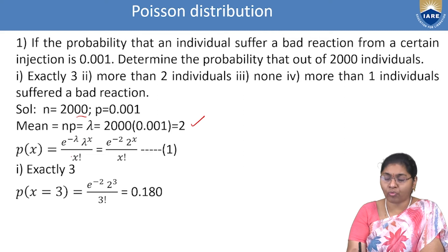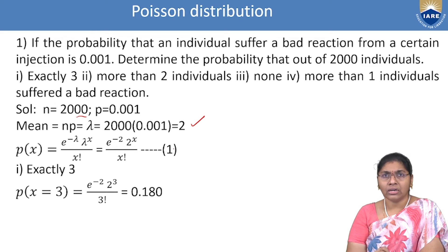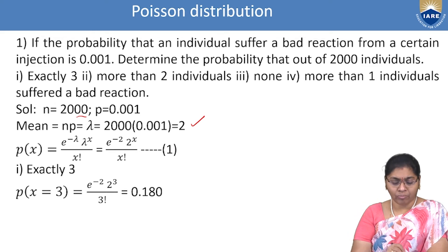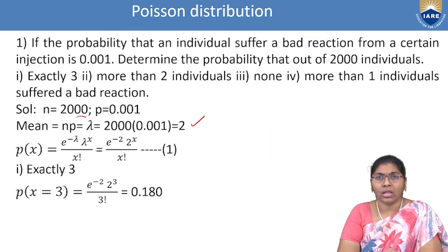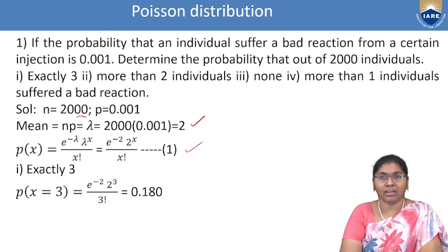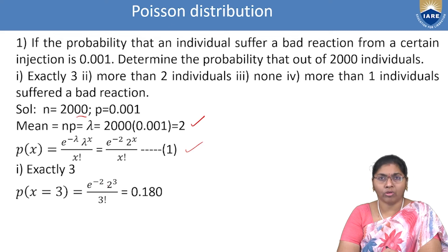The Poisson probability function with λ = 2: P(X = x) = e^(−2) · 2^x / x! — equation (1). First condition: exactly 3. P(X = 3) = e^(−2) · 2³ / 3! = 0.180.